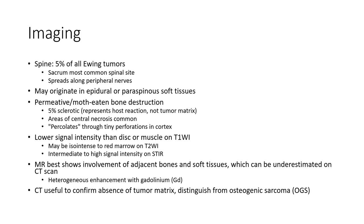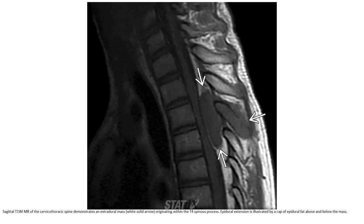Heterogeneous enhancement with gadolinium is characteristic. CT is useful to confirm absence of tumor matrix and to distinguish from host bone or extraosseous calcification. T1WI MRI of the cervical-thoracic spine demonstrates an extradural mass originating within the T4 spinous process.